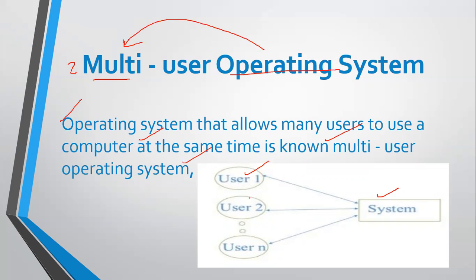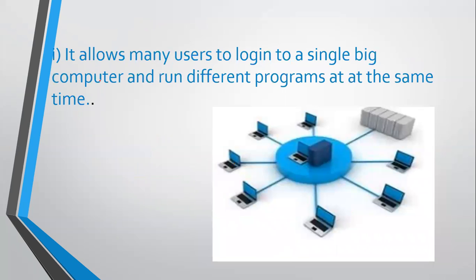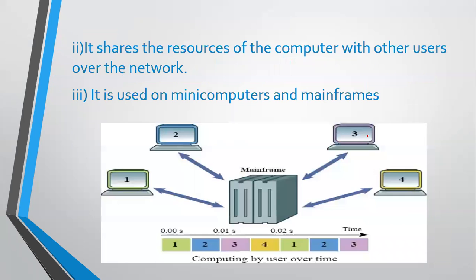In this example, you can see that in a multi-user operating system, more than one user — 10, 20, or even 100 users — can log into this system at the same time. This multi-user operating system allows many users to log into a single large computer and run different programs simultaneously.